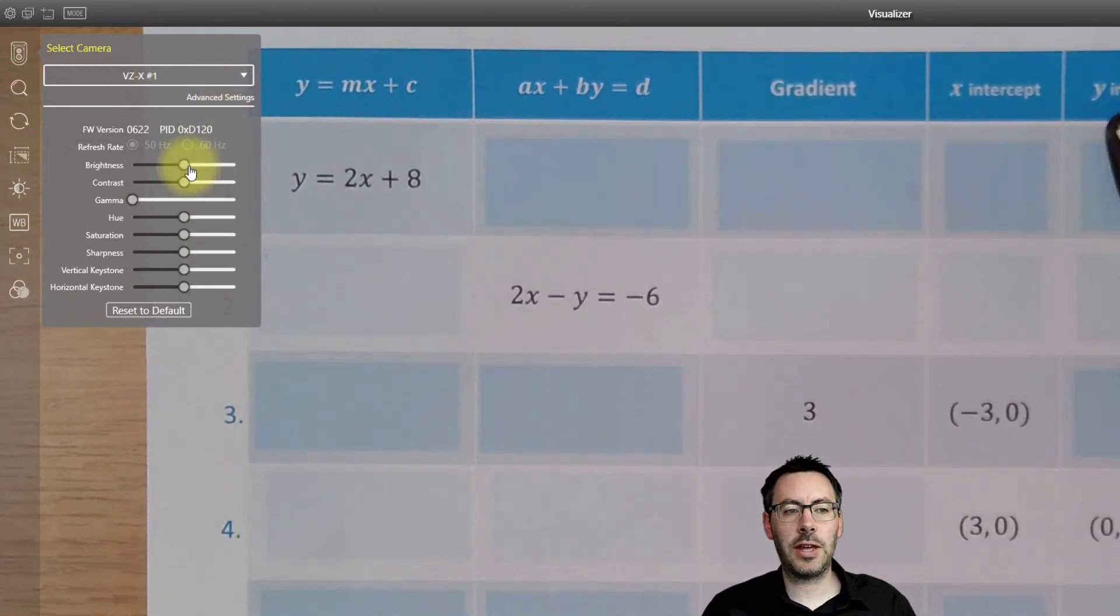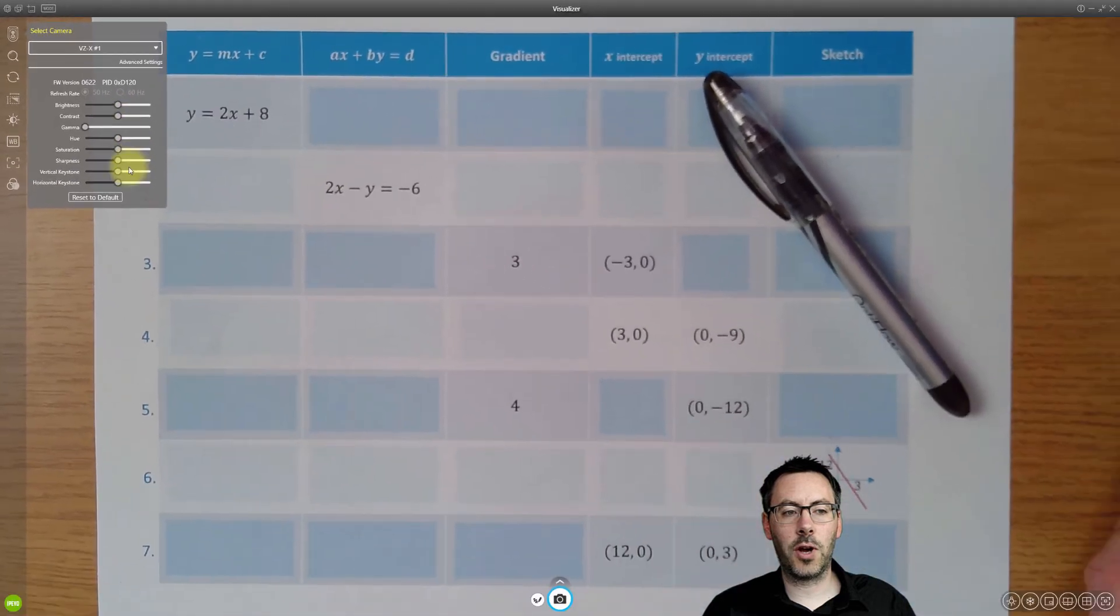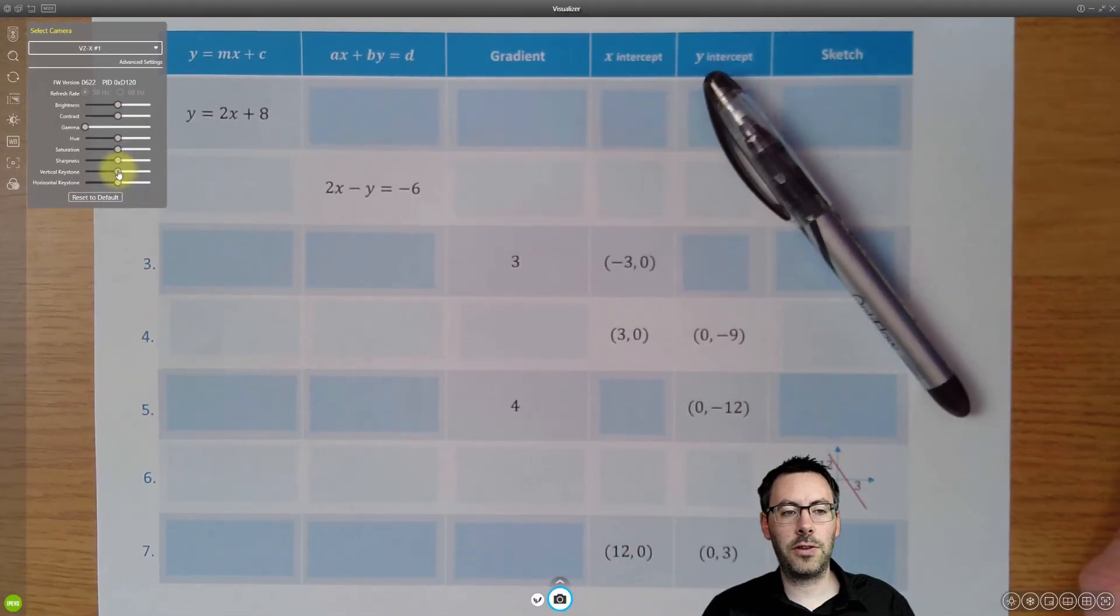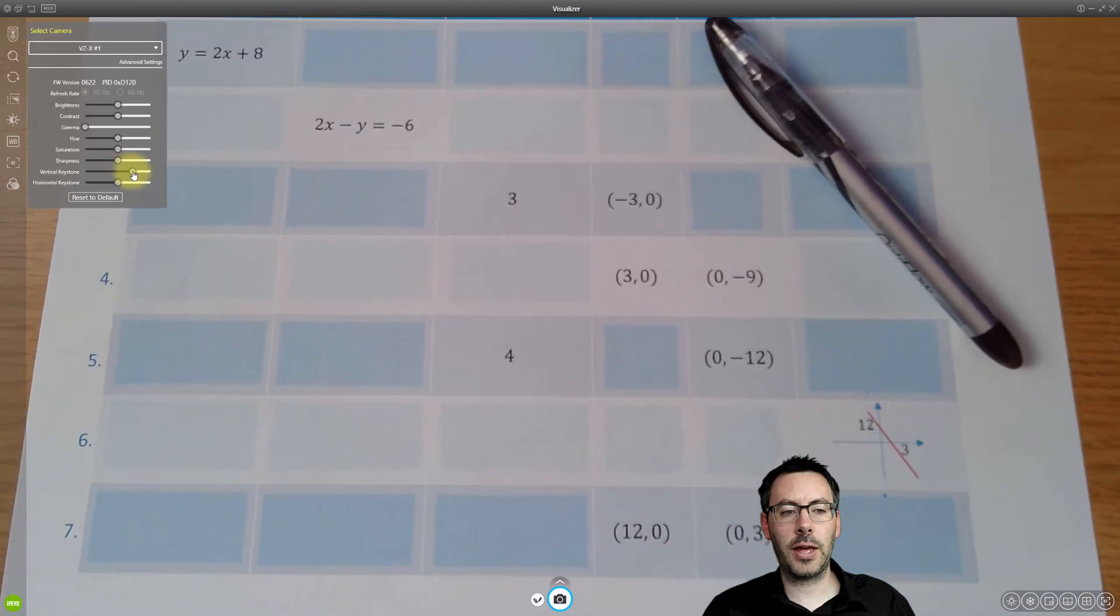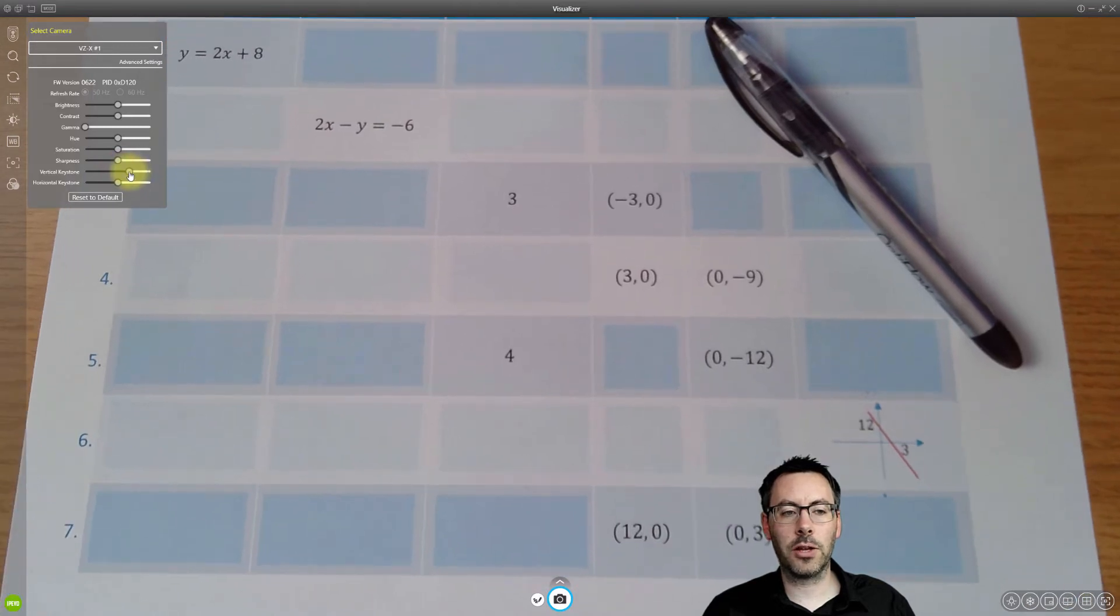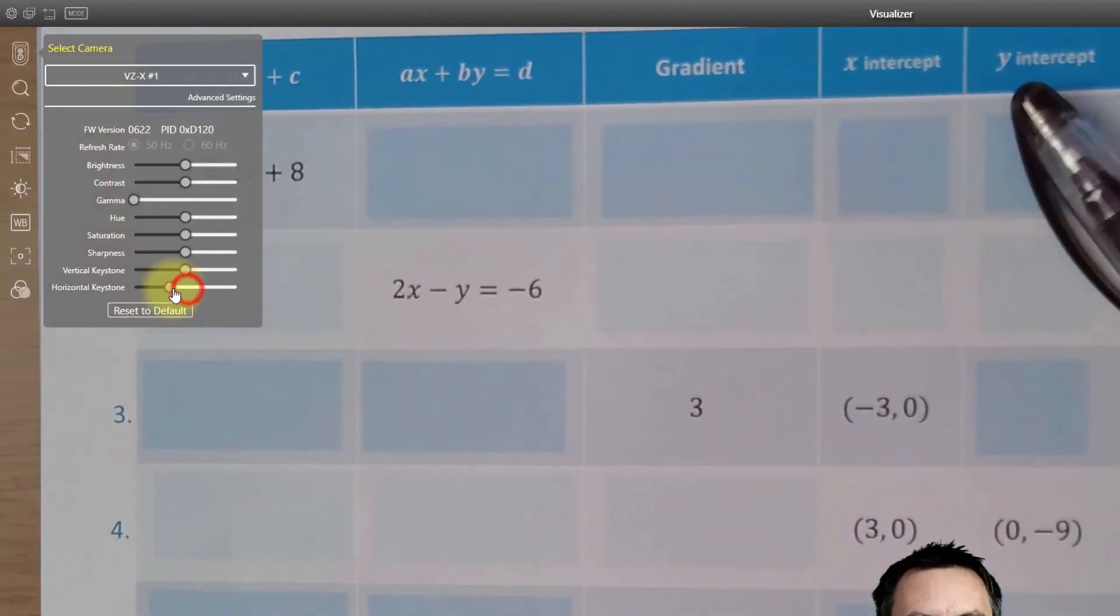I've got all these settings here so I can make sure that the image is bright enough. And if I need to keystone it, a bit like on a projector, if the camera isn't square to the table, I can change how that looks to make sure that it lines up as it should. Click reset to default if you want to go back to where it was.